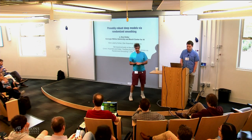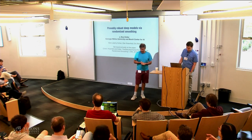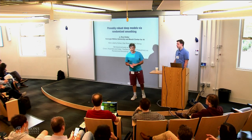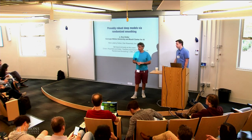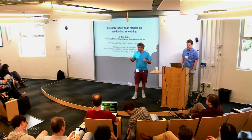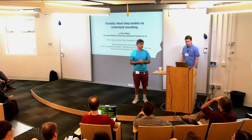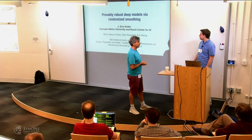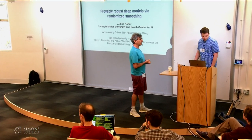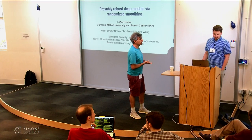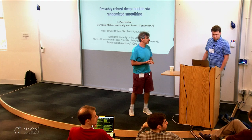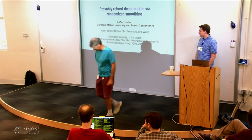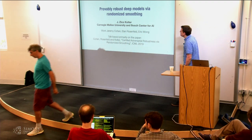So we have yet another day with about six speakers, and at the end of the day we're going to have a panel discussion. It's going to be very interesting. So let's start today with Zico Kolter, who is going to talk about provable robustness via randomized smoothing. Thanks very much.